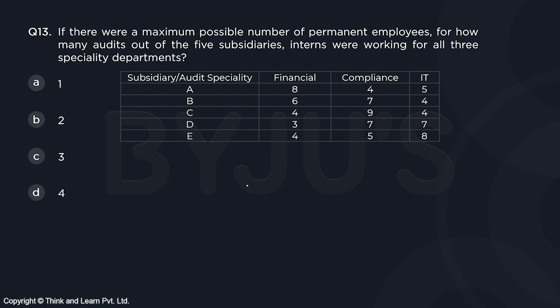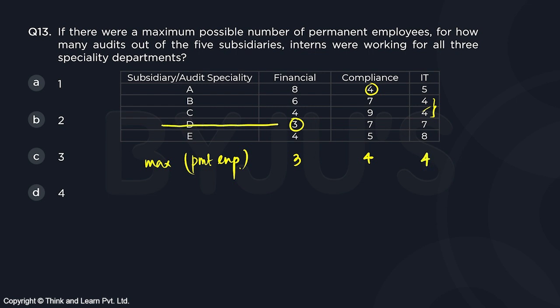Question number 13: If there were a maximum possible number of permanent employees, for how many audits out of the five subsidiaries were interns working for all three speciality departments? With maximum permanent employees — three in financial, four in compliance, and four in IT — three permanent employees take care of subsidiary D in financial, four in compliance take care of subsidiary A, and four in IT take care of subsidiary B.